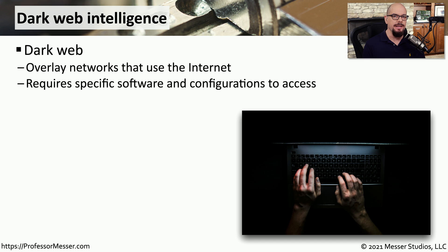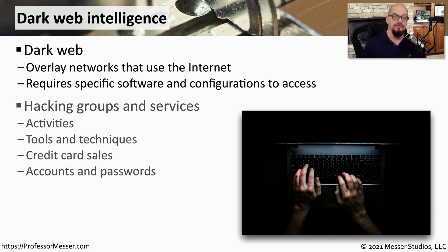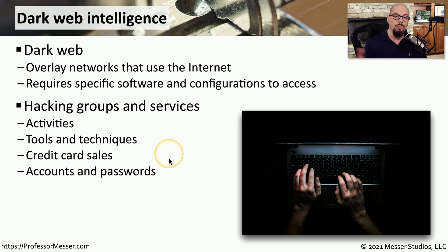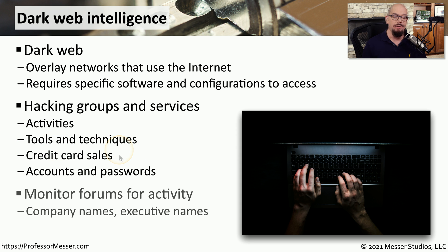One unique and significant type of threat intelligence comes from the dark web. This is an overlay to the existing internet that requires specialized software to access these private websites. There's extensive information to gather from the dark web, including the activities of hacker groups, the tools and techniques they use to gain access to people's networks, and websites dedicated to selling information they gather, such as credit cards and other account information. These forums can also be a valuable tool to use in your search for intelligence against the attackers.